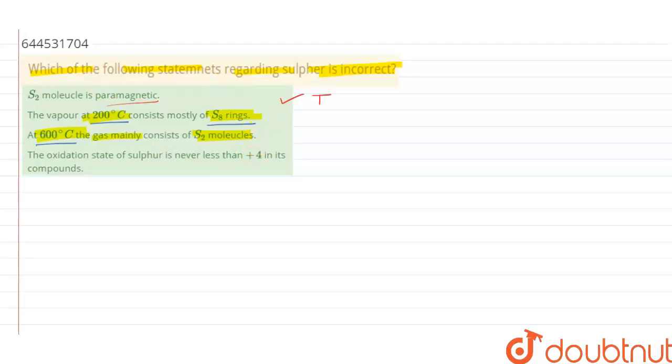So let's check this out. If we consider 200 degrees centigrade, then mostly the sulfur is present in the form of S8. And if we raise the temperature to about 600 degrees centigrade, then sulfur is found in the form of S2. So we can say both statements B and C are true.